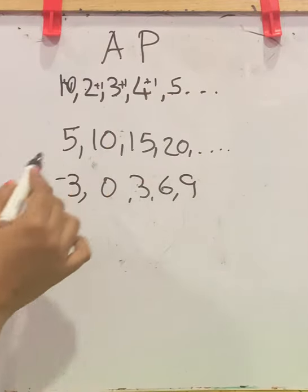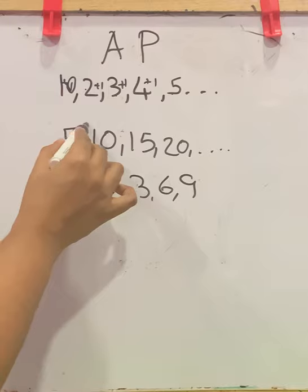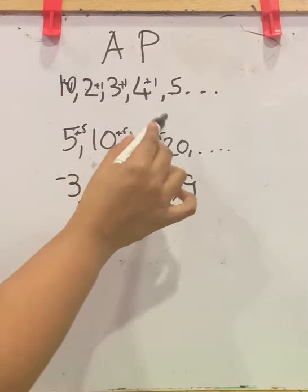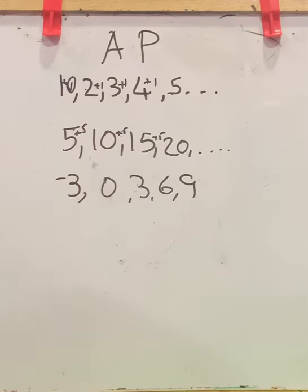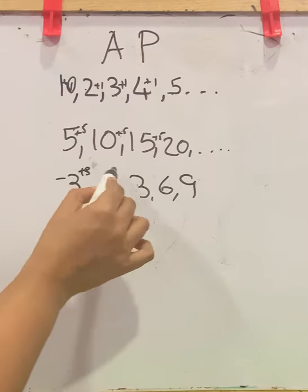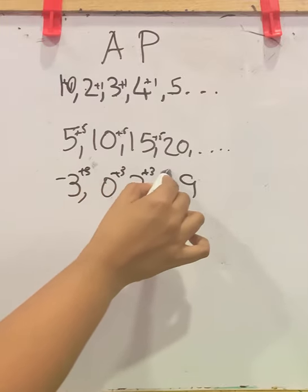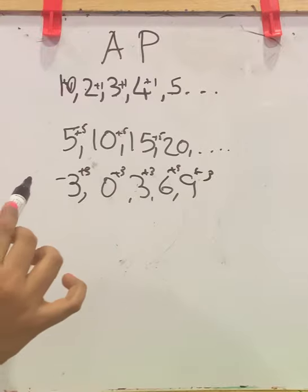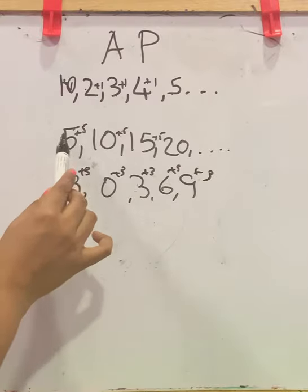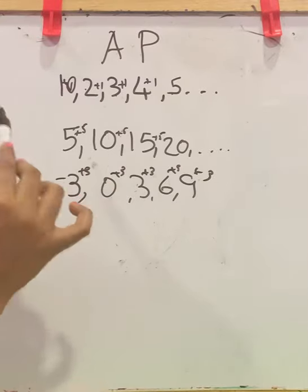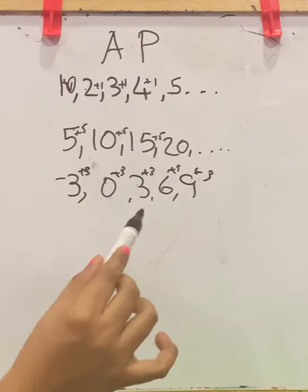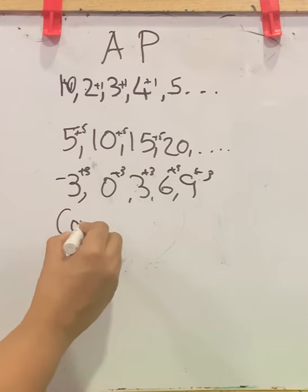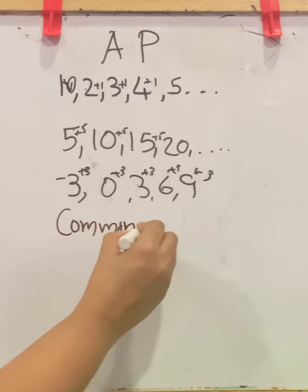What about this set? Here the fixed number is 5 — each number varies by 5. In another set, the fixed number is 3. This fixed number between each number in an arithmetic progression is called the common difference.